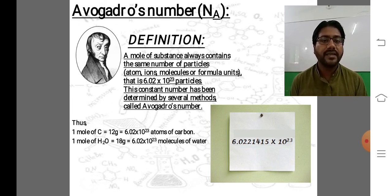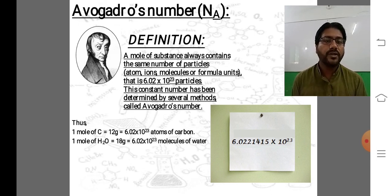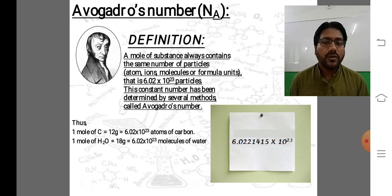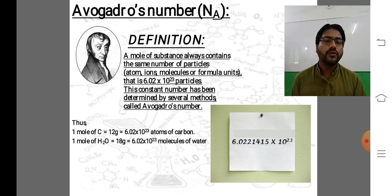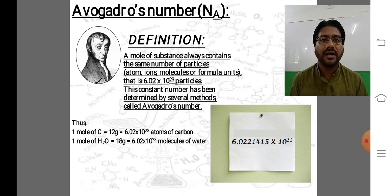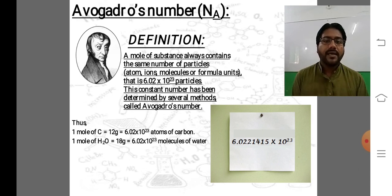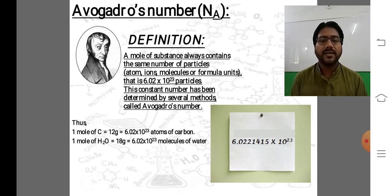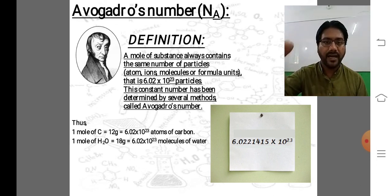Aur 18 grams jo hai water ka molecular mass hota hai, to 1 mole of water = 18 grams = 6.02×10²³ molecules of water. Teen terms mein baat karna similar hai — 1 mole of water bolein, ya 18 grams bolein, ya 6.02×10²³ particles bolein. Students, aaj ka lecture yahin tak tha. Umeed karta hoon aapko achhe taur pe samjha paya hoon. Agar koi cheez clear na ho to aap comment section mein message kar sakte hain. InshaAllah.